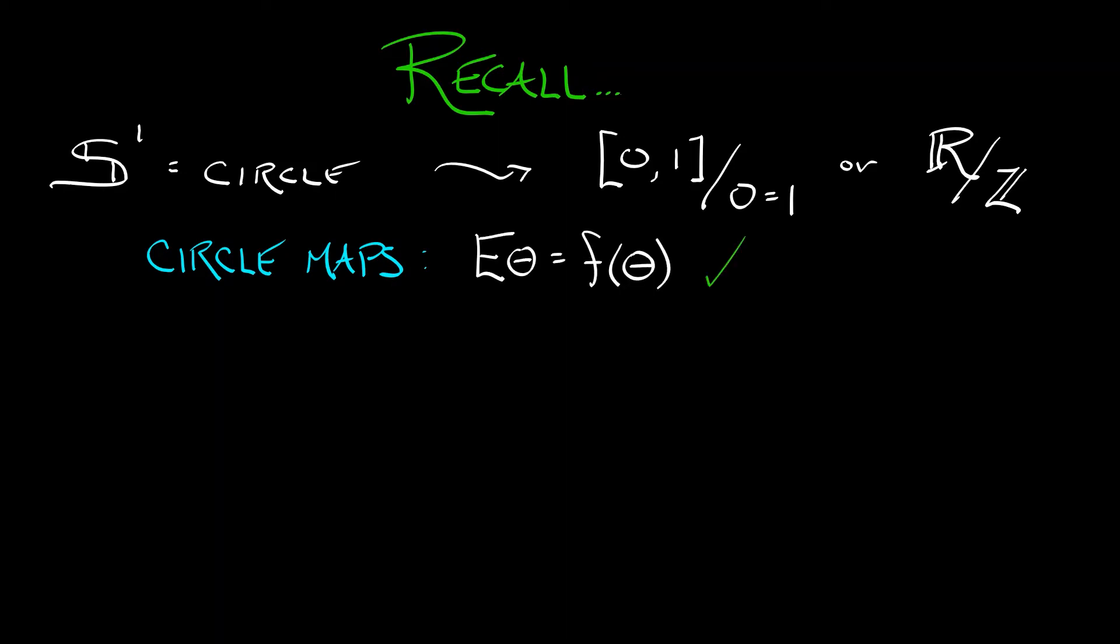Now what we're going to do is bump this up to a two-dimensional version. Of what? Of a circle. This is going to be a torus.